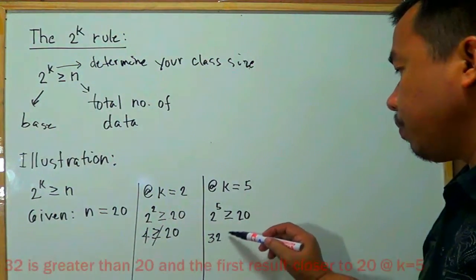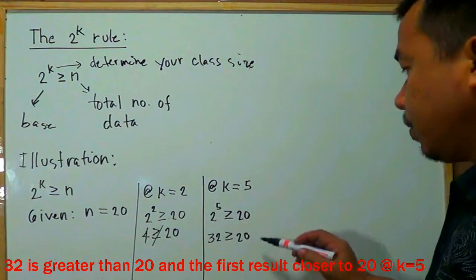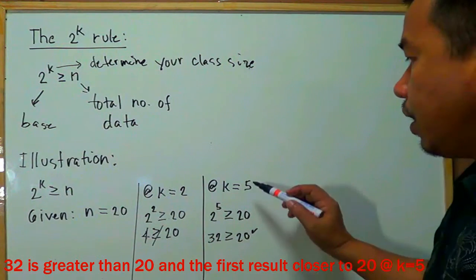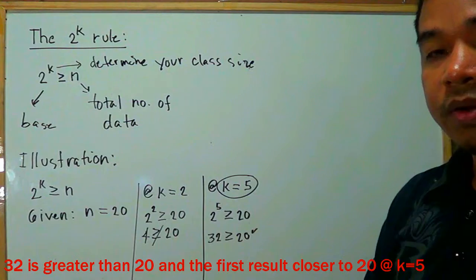So this is 32. This is greater than or equal to 20. Is this true? Yes. So we need to say our k is 5. K is 5.